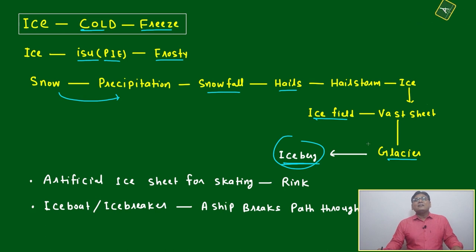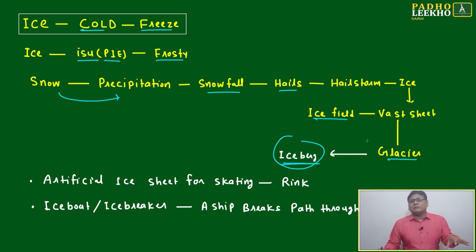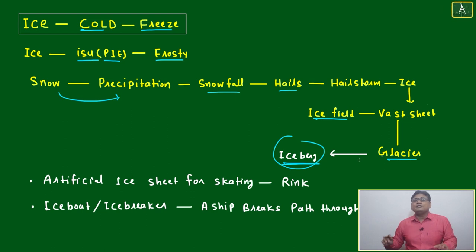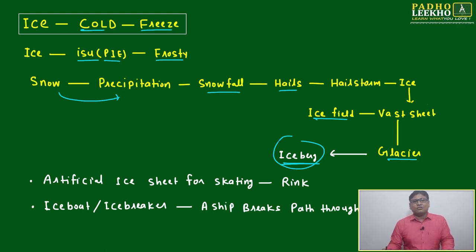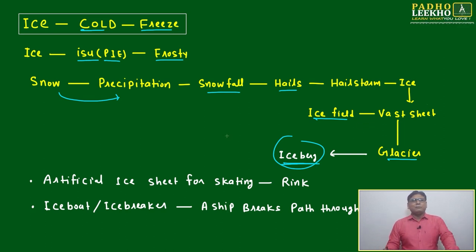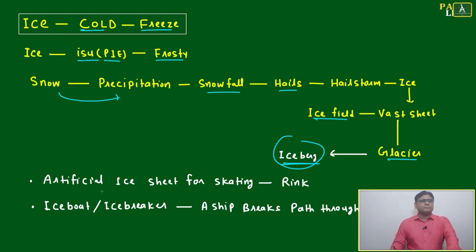A glacier will not move at a very high speed — it is almost stable. But if, due to any reason, a big part of ice breaks from the glacier and starts moving on water, that is called an iceberg. So an iceberg comes from a glacier, but both are large amounts or large sizes of ice.